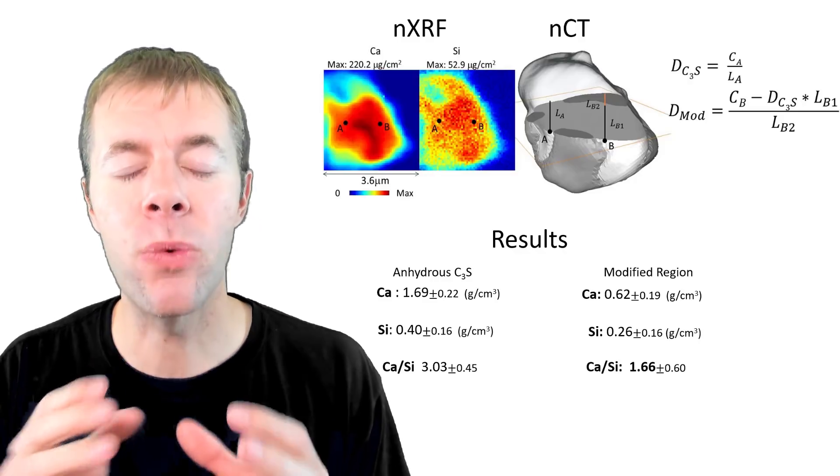So what is this modified region? What is it made up of? Well, we're going to use Nano XRF. If we look at the unreacted C3S or the cement, it matches exactly what we'd expect to see for that material. And this modified region seems to be made up of something called inner CSH or inner product CSH.